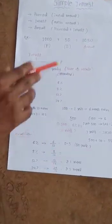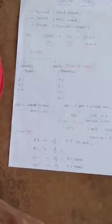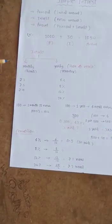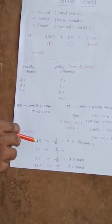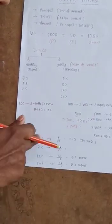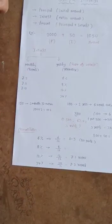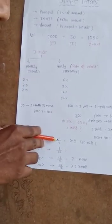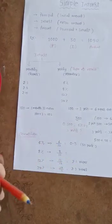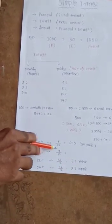Rate of interest is yearly, but we can convert it to monthly interest. For example, 6% rate of interest per year means we divide by 12 months. 6 divided by 12 equals 0.5, so 6% rate of interest equals 0.5% monthly interest, which is 50 paise.